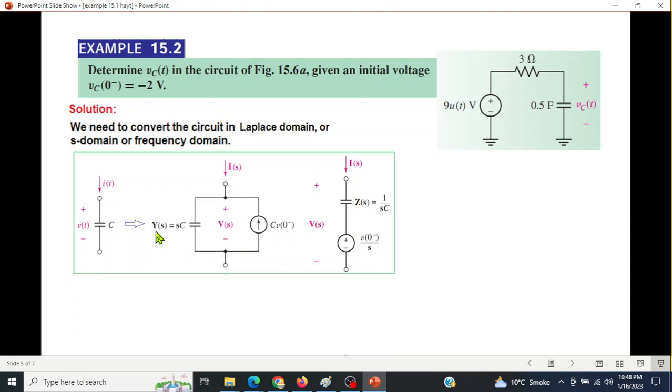The only thing I'll change: the book writes capacitor in admittance form Y(S)=SC. This creates problems when writing equations, so we'll write in Z form. Z(S) = 1/(SC). We'll use this for the equivalent circuit.